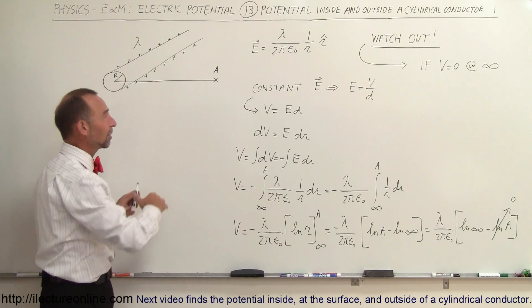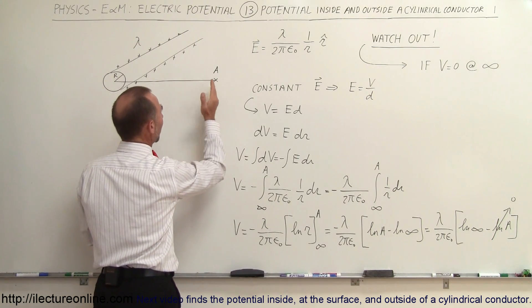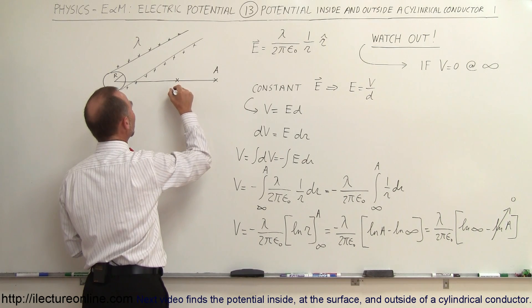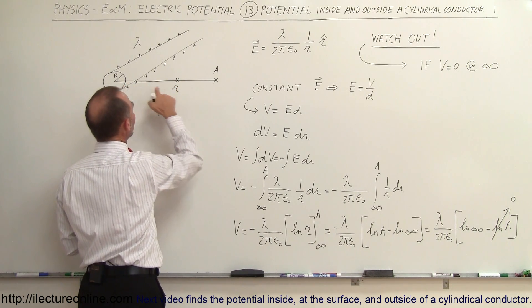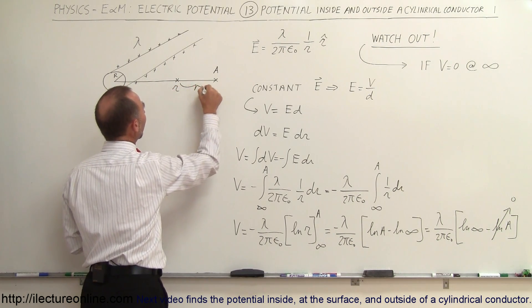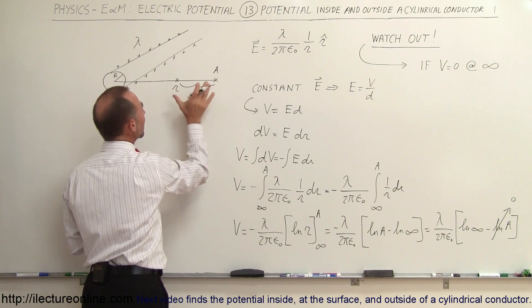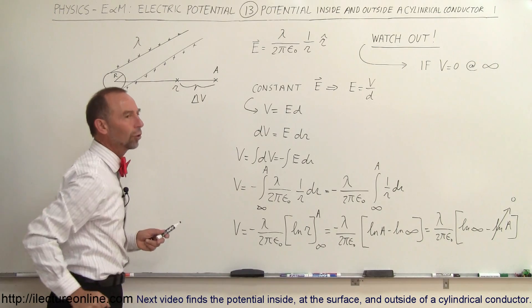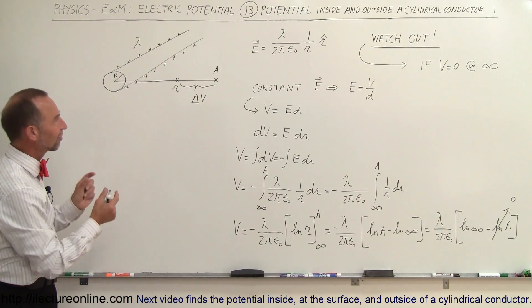What we have to do instead is pick some arbitrary point of reference, like right here, and then say, let's find the potential difference at some different location at the distance r away from the center, and we're going to find the delta V, the potential difference from some fixed arbitrary point to some point closer to the cylinder.